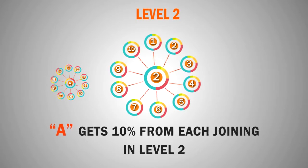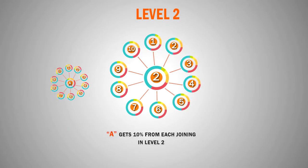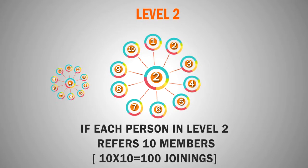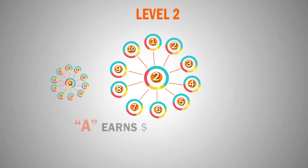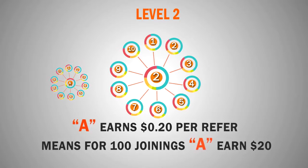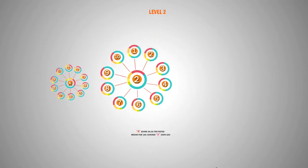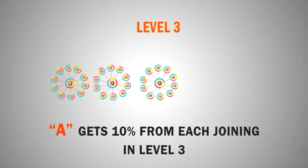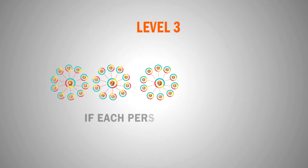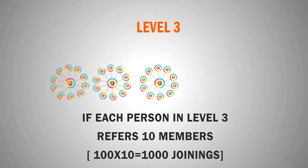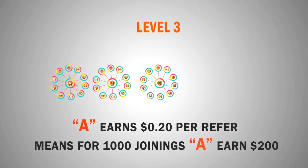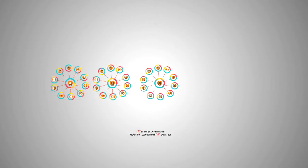In the same way, A will get 10% from its level 2. If every person of level 2 refers at least 10 friends, then there will be 100 joinings for A, and A will get 20 cents from each referral — so A will earn $20 from level 2. At level 3, A gets 10% commission. If every person refers at least 10 persons, there will be 1,000 friends at level 3, and A will get $200 earnings from level 3.